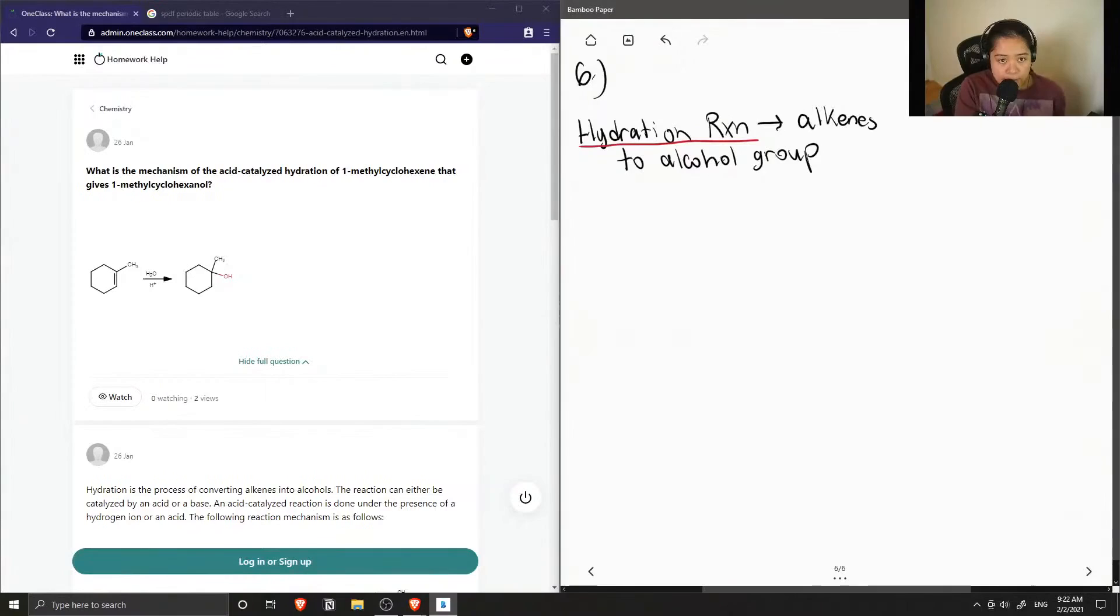So we need to draw the mechanism for this reaction, and they said that this takes place in acidic conditions. Let's start off with our reactant, which is 1-methyl-cyclohexene, which you can see is just a double bond on the cyclohexene with a methyl group on carbon-1.